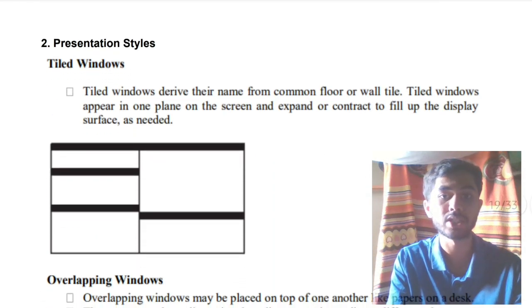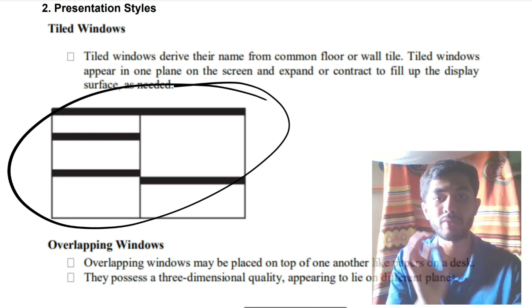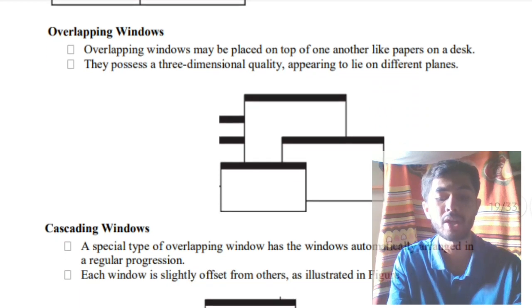The second question is the presentation styles. The presentation styles are mainly three styles, very simple ones. The first is tiled windows. This means all will be occurring simultaneously and no one will be overlapping around each other. Those are the tiled windows. The main thing you have to write is the advantages and disadvantages. For more information of advantages and disadvantages, go through my theory video. In that I've explained in depth.